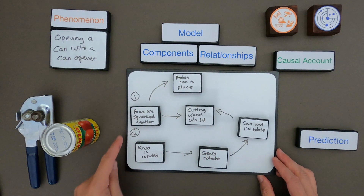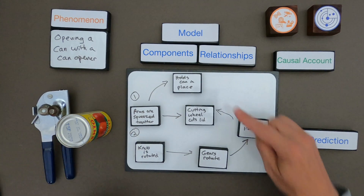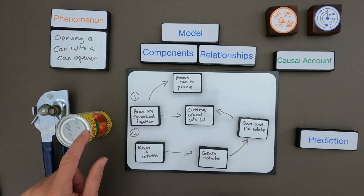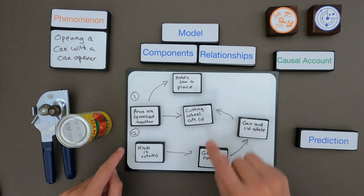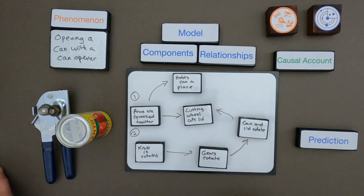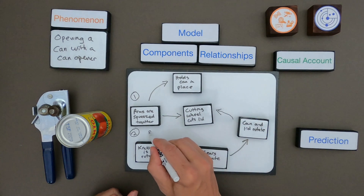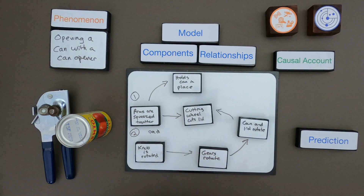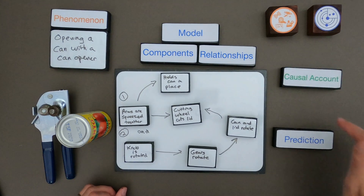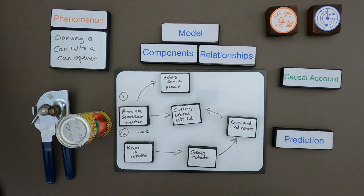On my model I tried to put it in order. First, you squeeze the arms together — that holds the can in place but also allows the cutting wheel to cut the lid. Then the second thing is you rotate the knob, which rotates the gears, and then the can and the lid rotate. I may want to note that both steps one and two have to take place — you can't just do one and then the other. Now I've got my components and relationships; the next thing is to write a causal account.